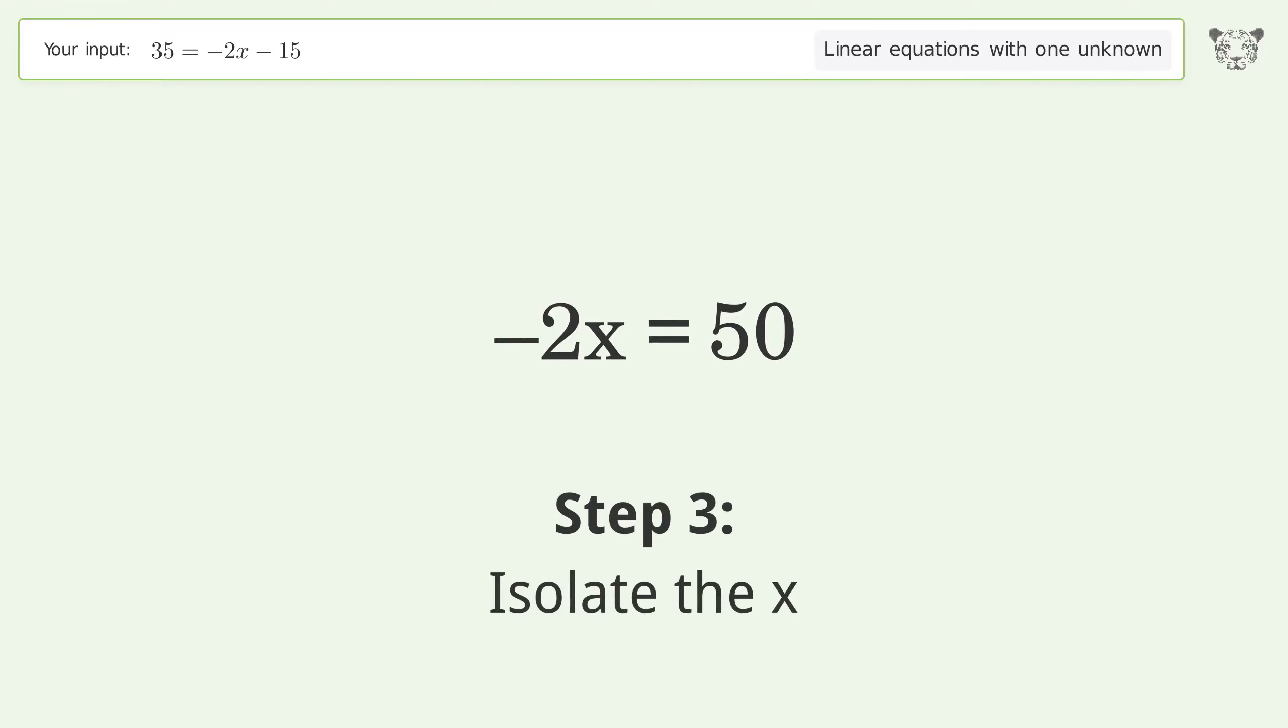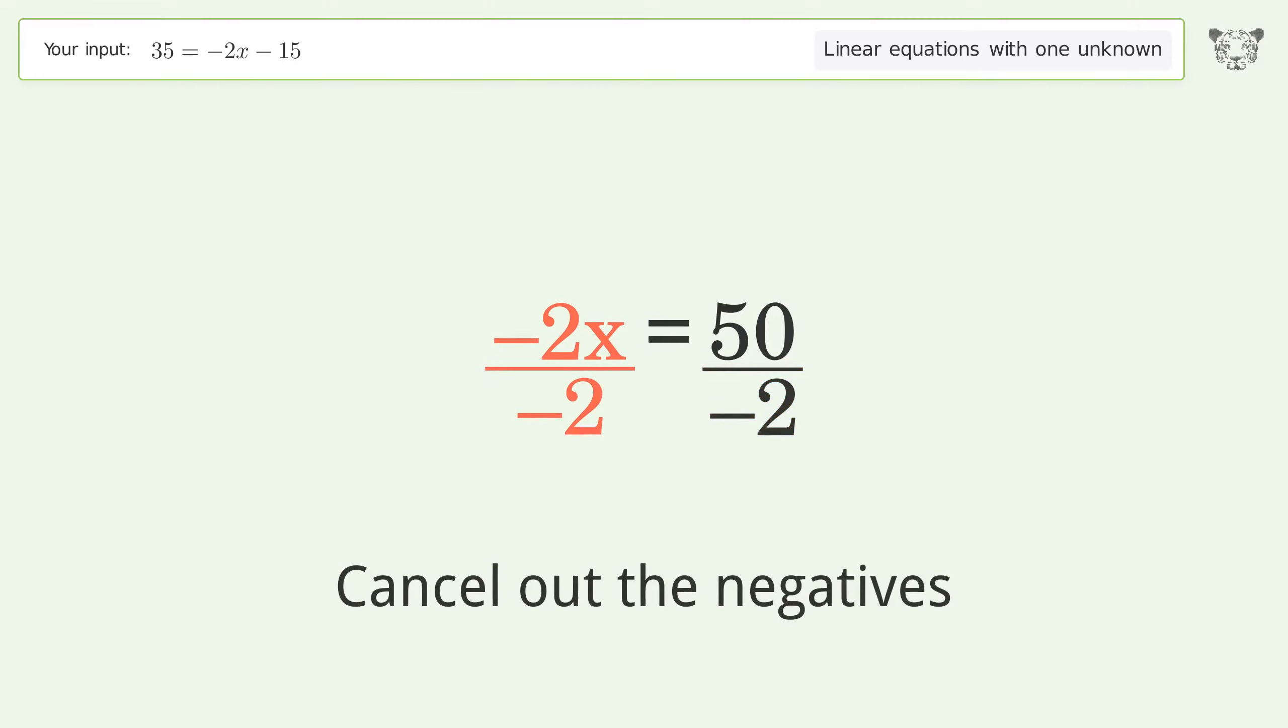Isolate the x. Divide both sides by negative 2. Cancel out the negatives.